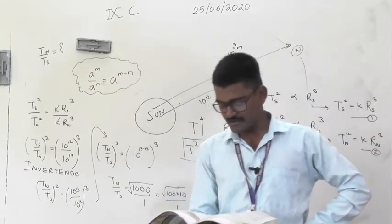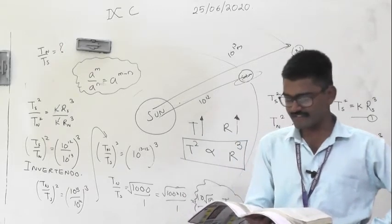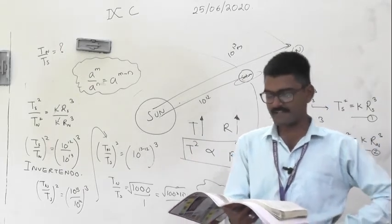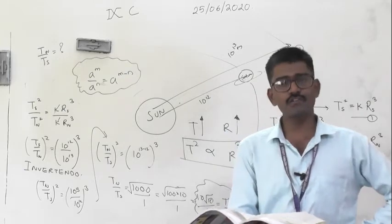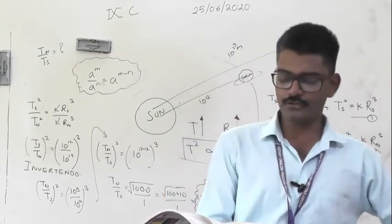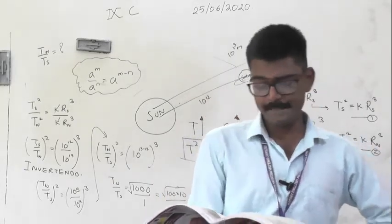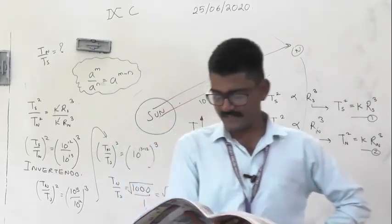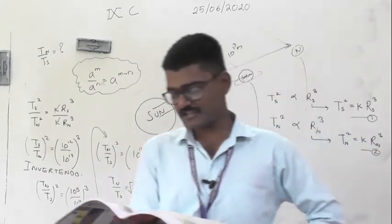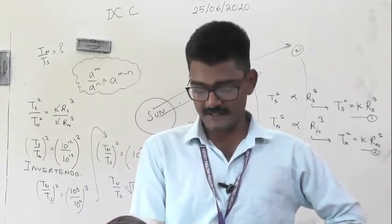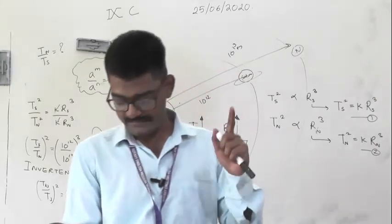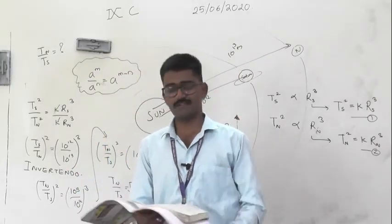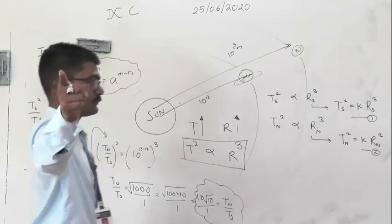Next: the escape velocity of Earth is 11 km/s. Find the escape velocity of a planet having twice the mass and twice the radius. Solve this and send it on the group. Question 19: two bodies of mass 2 kg and 8 kg are separated by a distance of 9 meters. Find the point where the resultant gravitational field is zero — this is a null point question. Write it in your notebook.